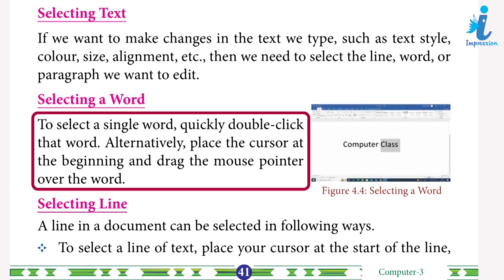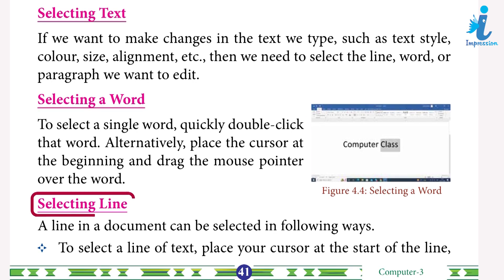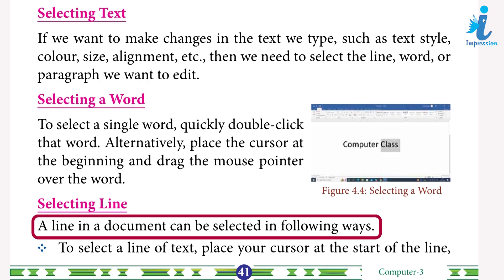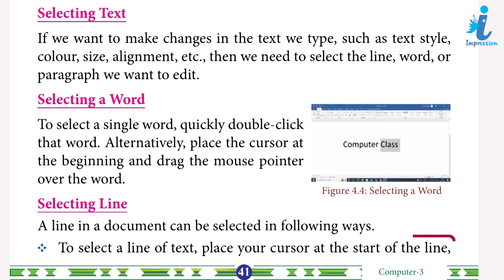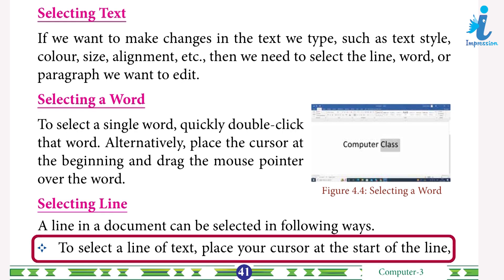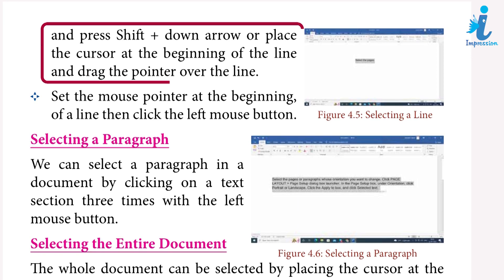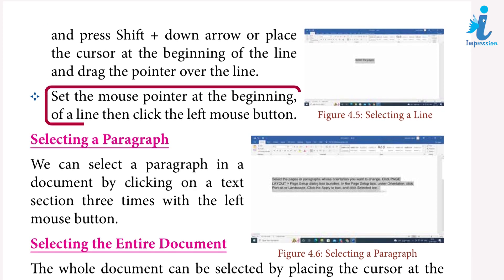Selecting lines: to select a line of text, place your cursor at the start of the line and press Shift + Down Arrow, or place the cursor at the beginning of the line and drag the pointer over the line. You can also set the mouse pointer at the beginning of a line and click the left mouse button.